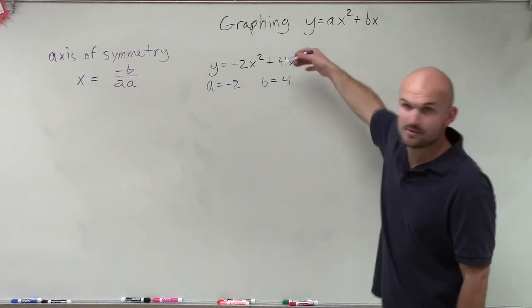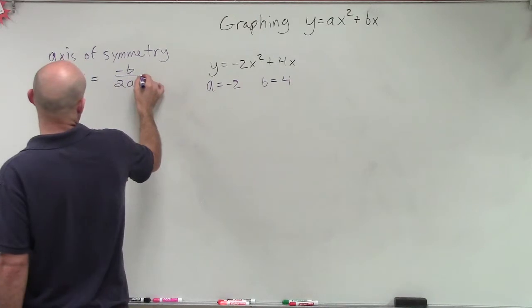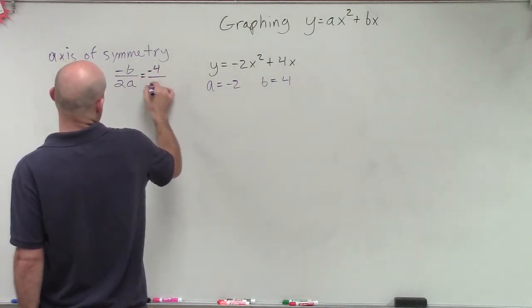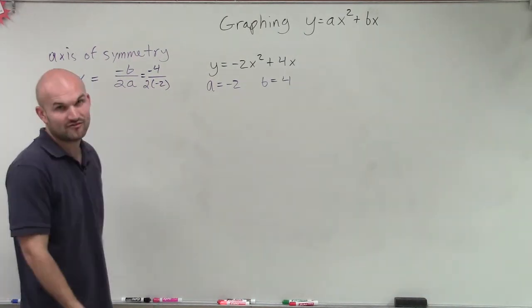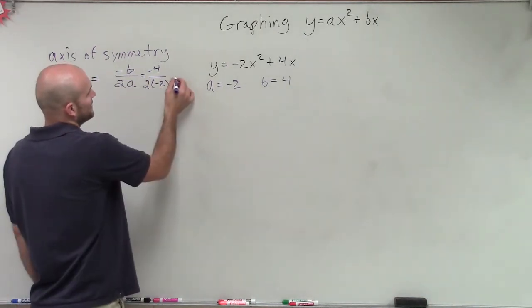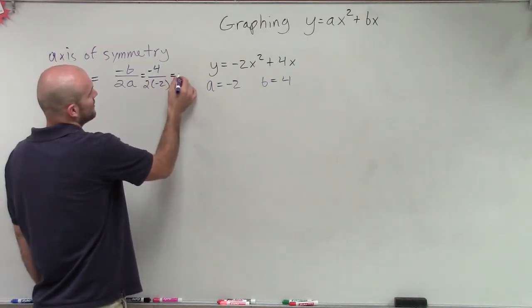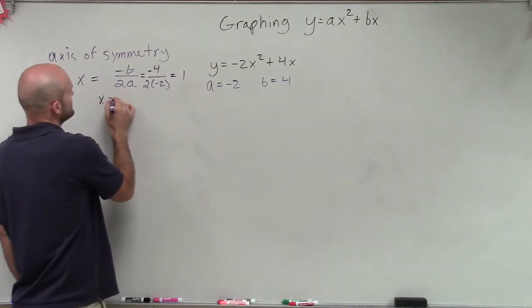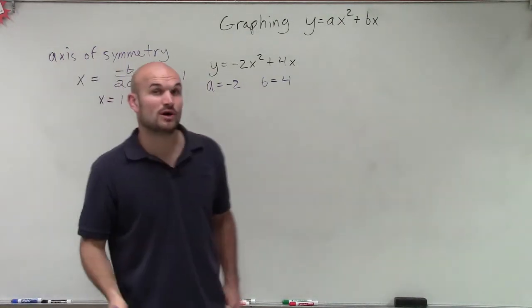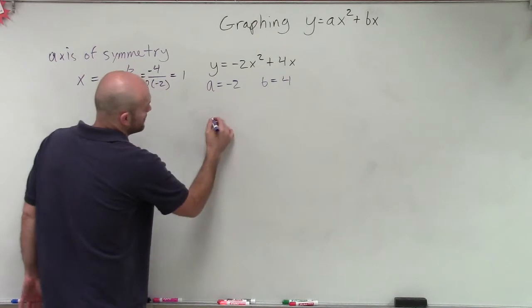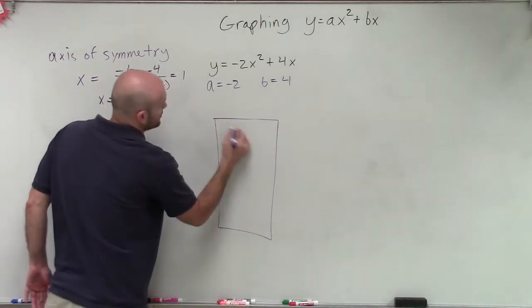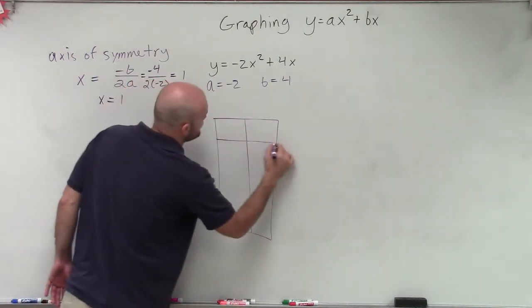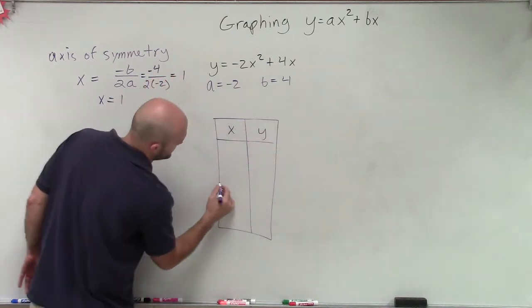In this case, the opposite of b would be negative 4, divided by 2 times negative 2. Well, 2 times negative 2 is negative 4. Negative 4 divided by negative 4 equals 1. So my axis of symmetry is x equals 1. When we created our table of values, it was important to pick points to the left and to the right of the axis of symmetry.